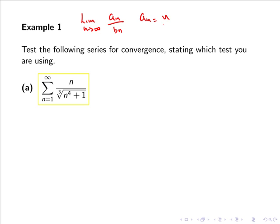So a_n is n all over (n⁴ + 1) to the power of 1/3, and b_n is obtained by considering the leading order terms of a_n.